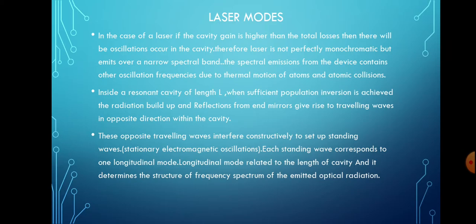If the laser cavity gain is higher than the total losses in the cavity, then oscillations occur. These total losses may be due to scattering losses or dispersion losses. When the cavity gain exceeds total losses, oscillations occur and therefore the laser does not produce perfectly monochromatic light; rather it emits a narrow spectral band of frequencies. These different frequencies are due to the thermal motion of atoms and atomic collisions.